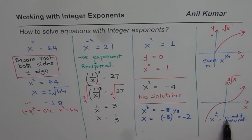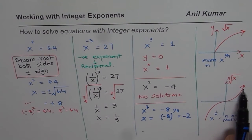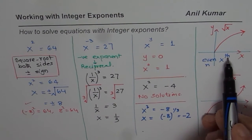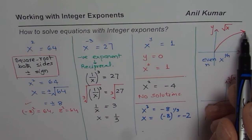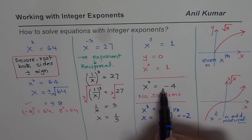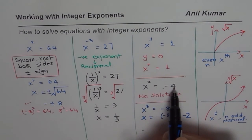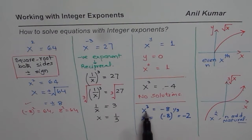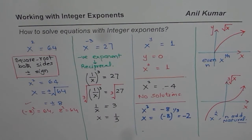So when n is odd, the answers could be negative or positive. However, if n is even, we are only looking for solutions that are positive. That is why x squared equals negative 4 has no solution, but x cubed equals negative 8 does have a solution. I have taken numbers for which we get whole number solutions, but remember you can use a calculator to find solutions rounded to a few decimal places.